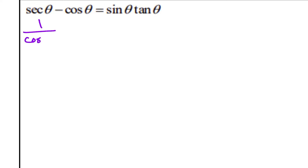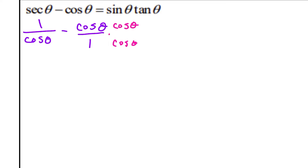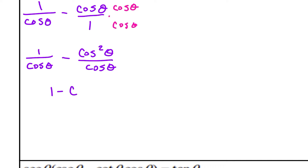I know that secant equals 1 over cosine of theta, minus cosine of theta. I know that cosine technically represents cosine over 1, so maybe I can put those together into a single fraction. I'll multiply by cosine over cosine to get the same denominator. So now I have 1 over cosine of theta minus cosine squared of theta over cosine of theta, which comes together to be 1 minus cosine squared theta over cosine theta.